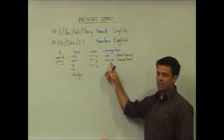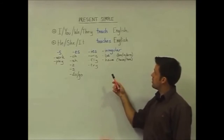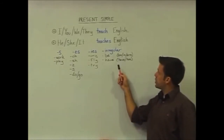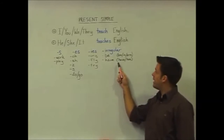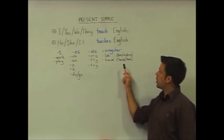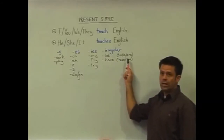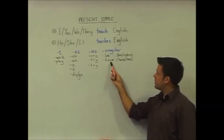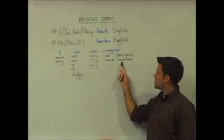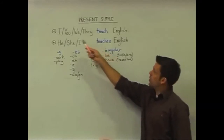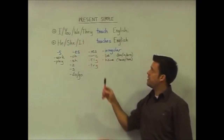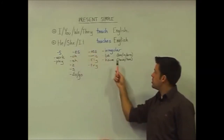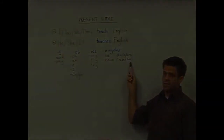For the irregular verbs: 'be' and 'have'. For subject I, we use 'am'. For he, she, and it, we use 'is', whereas with you, we, and they, we use 'are'. For 'have': it stays as 'have' for I, you, we, and they, but for he, she, and it, we change 'have' to 'has'.